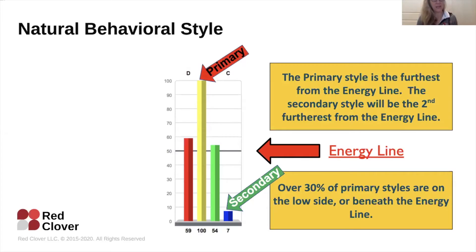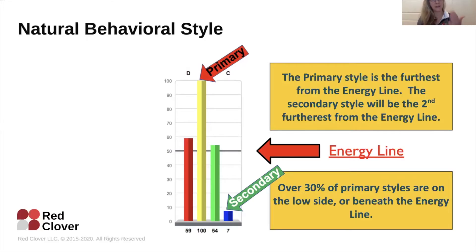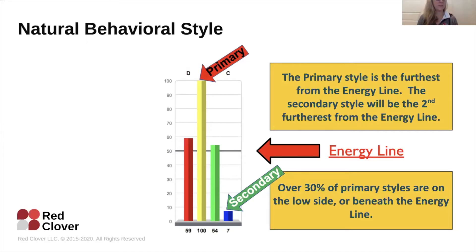I want to give you an overview of how we identify someone's normal behavioral style. For the instrument we use, we measure both the highs and the lows. Whatever is the furthest away from the 50% energy line is typically the primary style. For about 20% of the population in our experience, the primary style is actually a low value — below the energy line is their dominant function. For example, a D score of seven with every other measurement closer to the energy line means the dominant style is something much more reflective — someone who listens first and gives others in the room the opportunity to be heard.